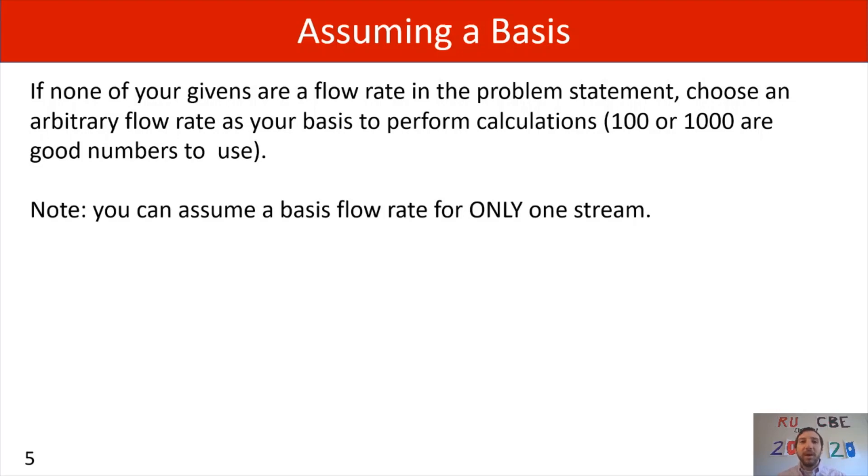And we're going to use that to help us with all the calculations. And just keep in mind, though, that when you assume a basis flow rate, you can only apply that to one stream. You cannot apply to every single stream and just pick a basis of 1,000 for streams 1, 2, and 3. Doesn't work like that. You pick one, and then you build off of that one stream's flow rate.